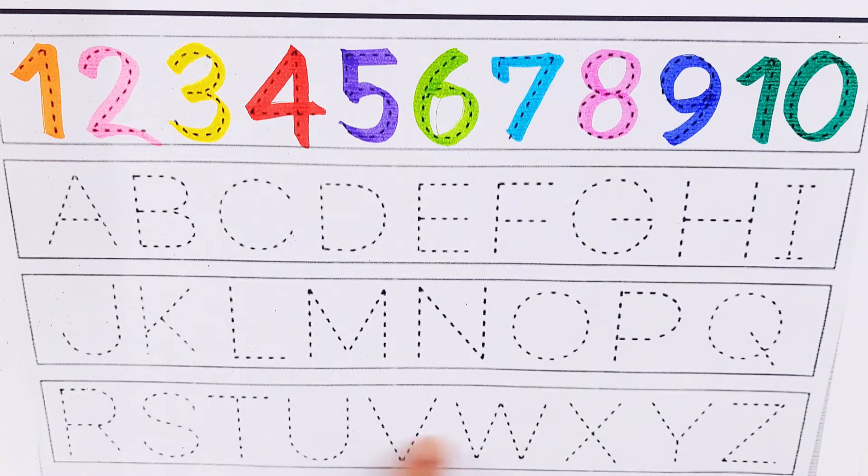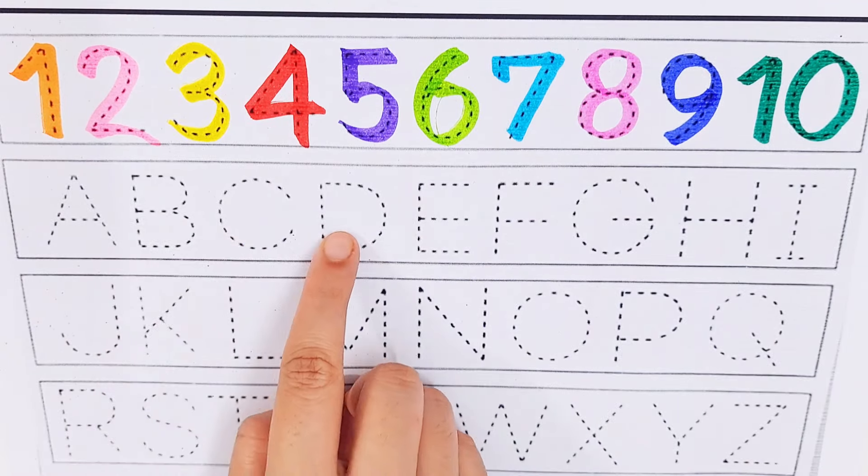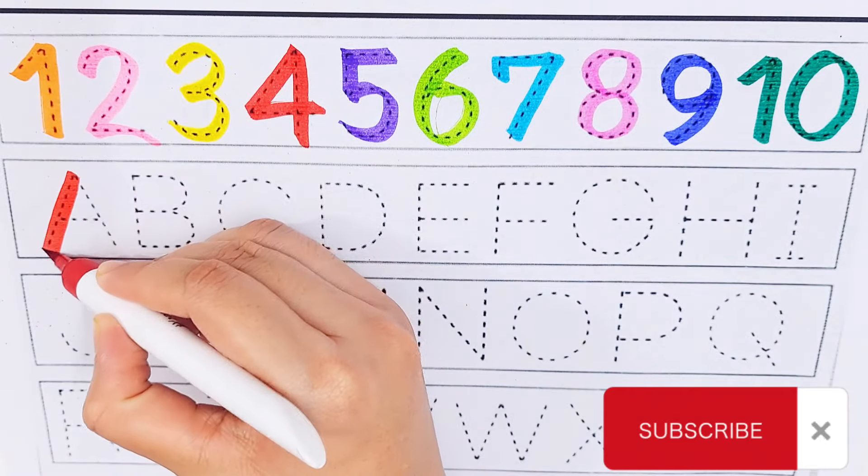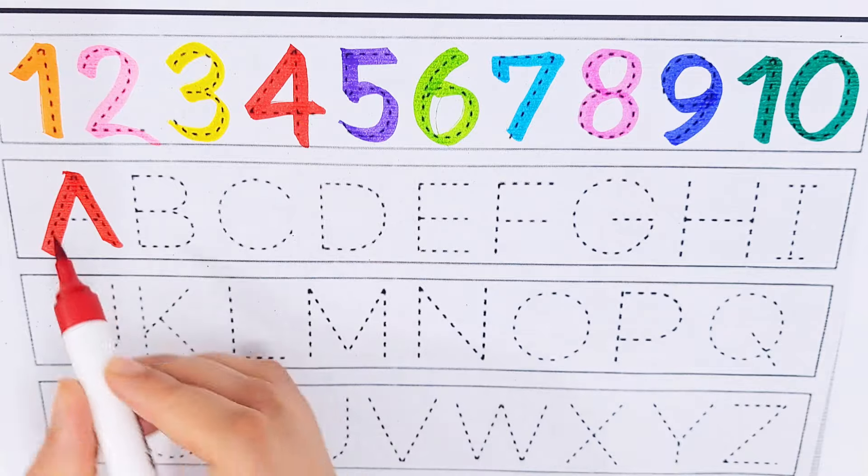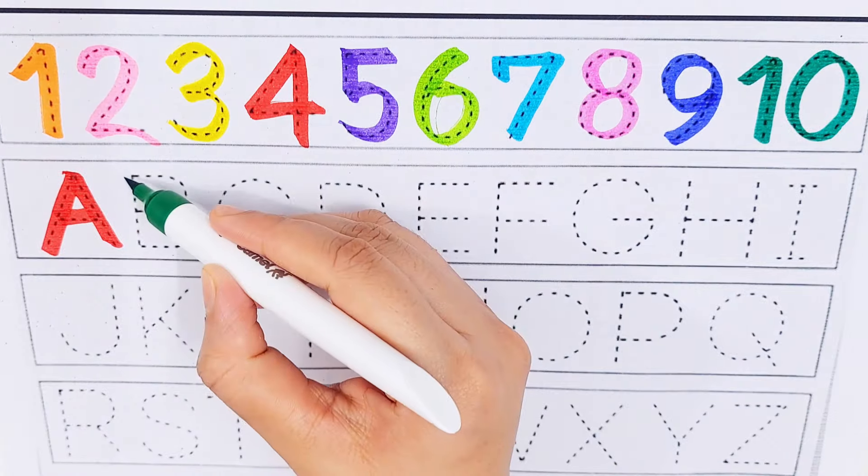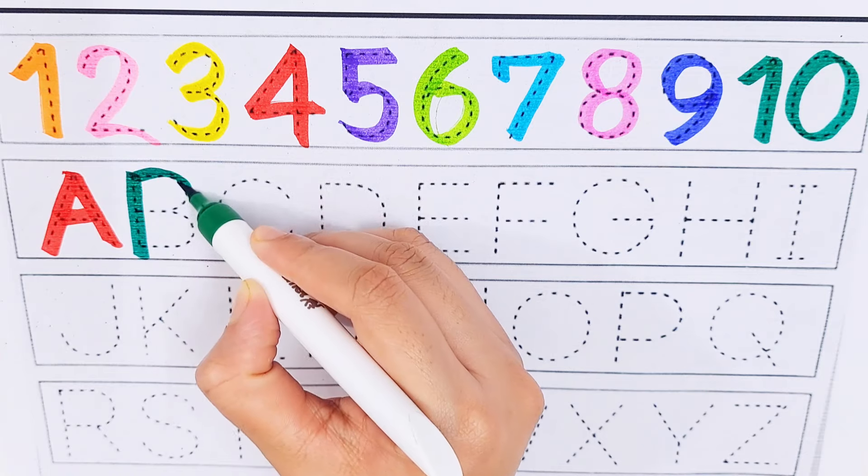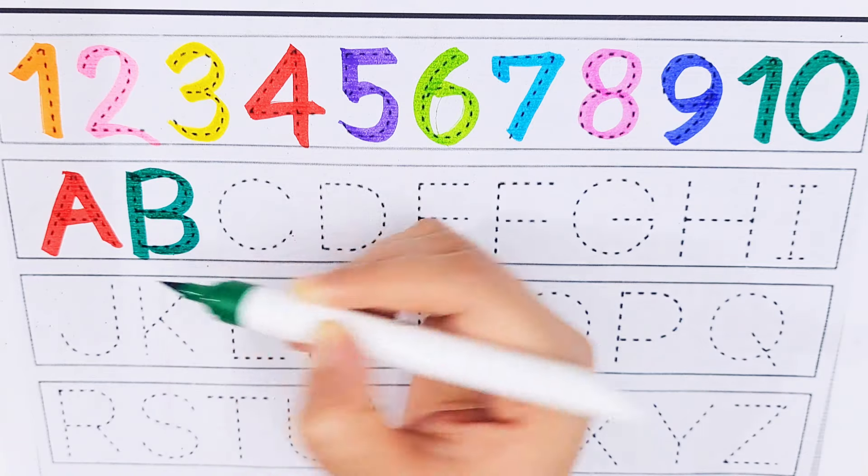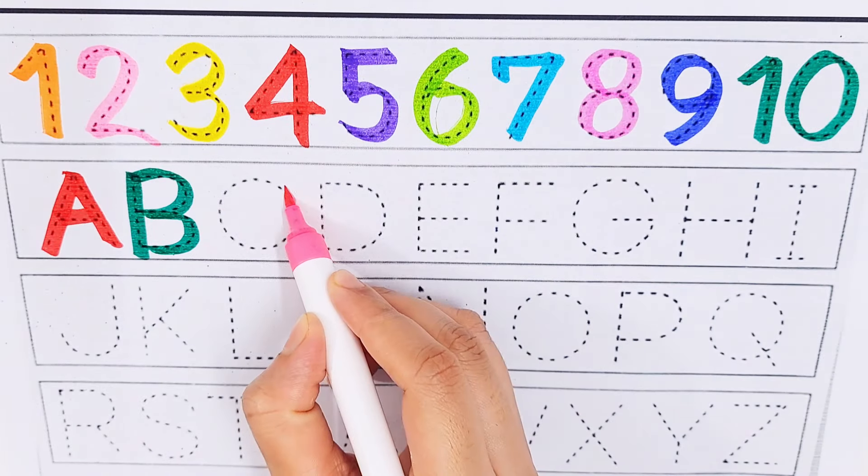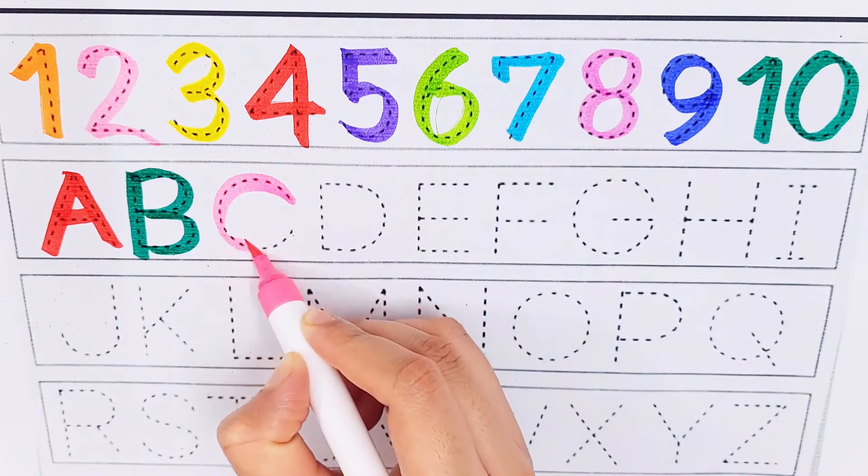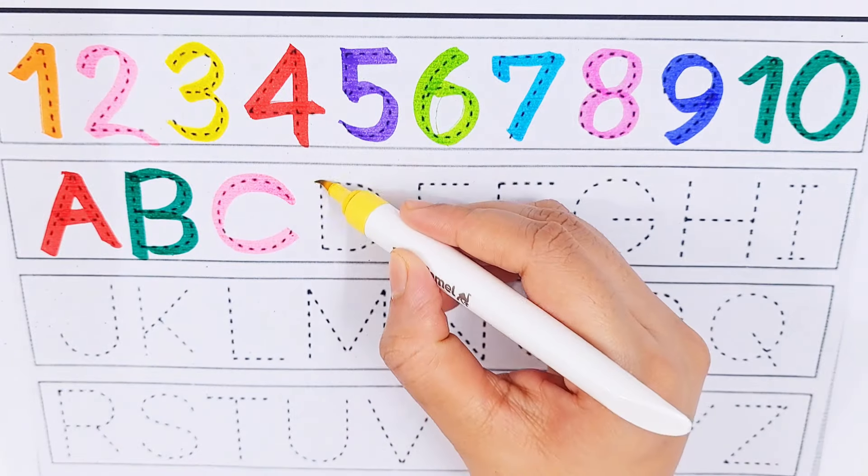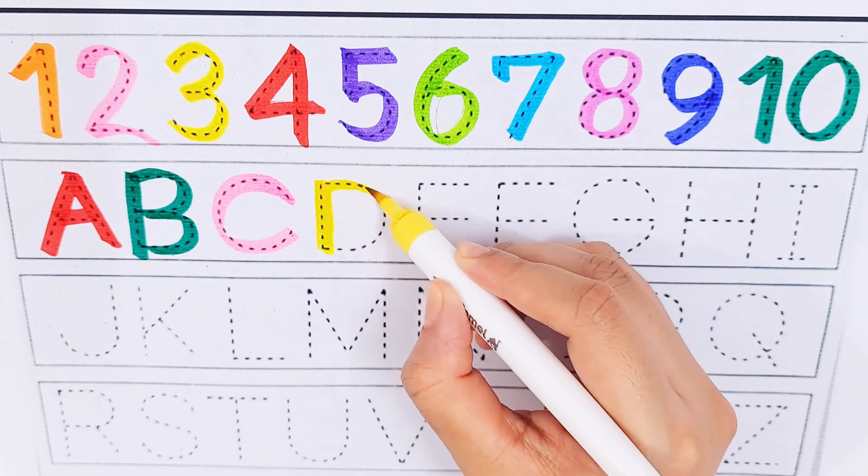Let's learn some alphabets. A, B, C, D. Red color A, A for avocado. Dark green color B, B for box. Pink color C, C for cucumber. Yellow color D, D for doll.